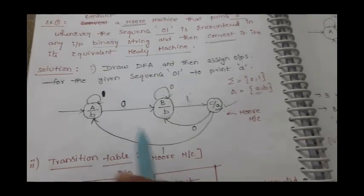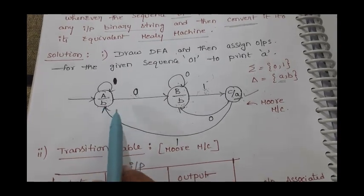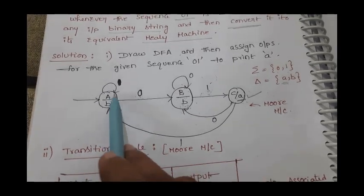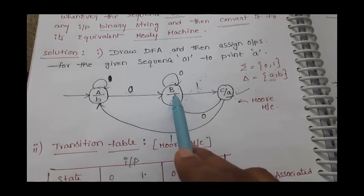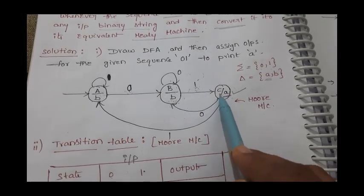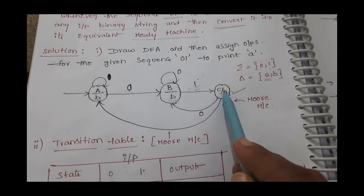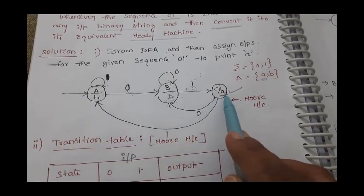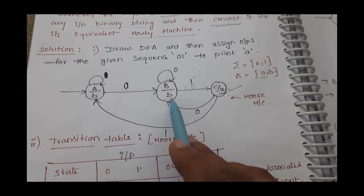As we know, in Moore machines each state is associated with its output. Our sequence is 0-1, so I am starting with state a. State a with input 0 goes to state b, and state b with input 1 goes to state c — with output 'a', since when the 0-1 sequence is completed it prints 'a'. Otherwise there is no output, so states a and b have output 'b'.